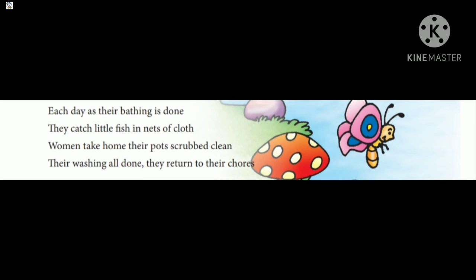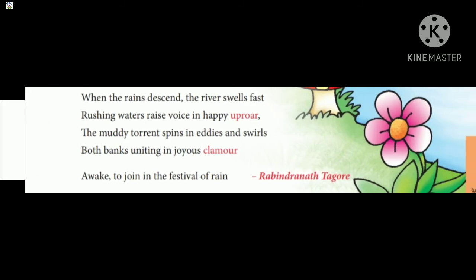Through this paragraph, the poet wants to say that each day bathing is done and they catch little fish in nets of clothes. Women clean their pots and wash their clothes and return to their chores. इन पंक्तियों द्वारा कवि कहना चाहते हैं कि गर्मियों में हर रोज लोग नदी में नहाते और मछलियाँ पकड़ते थे और औरतें अपने बर्तनों को अच्छे से रगड़-रगड़ कर साफ करती और कपड़े धोकर वापस घर लौटकर अपना काम करती थीं।